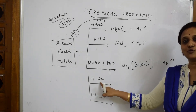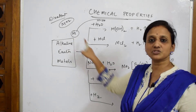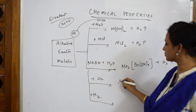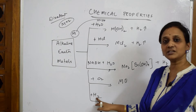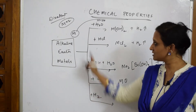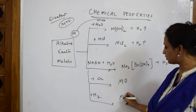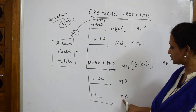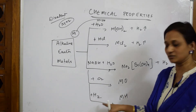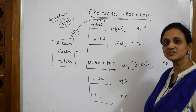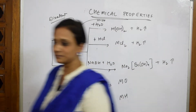Now for oxygen: the valency of the metal is +2 and oxygen valency is −2, so the salt formed is MO. In the hydrogen case, the metal valency is +2 and hydrogen valency is also +2 — wait, they combine together to form MH₂, which is the product formed.